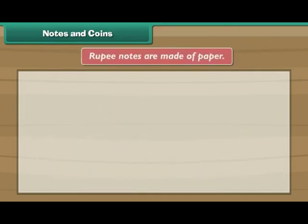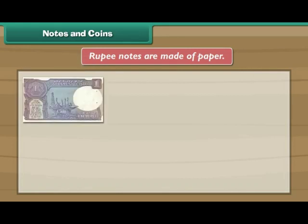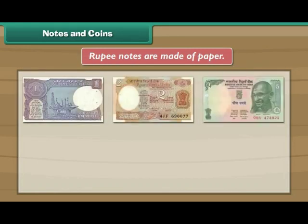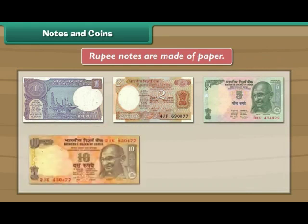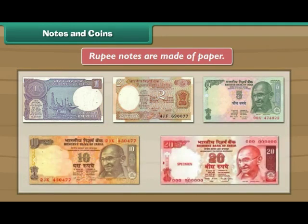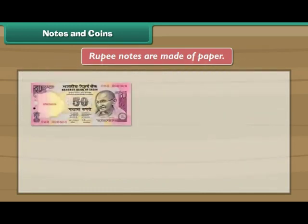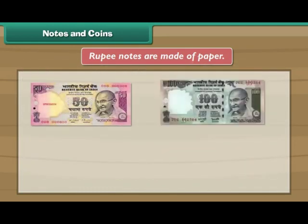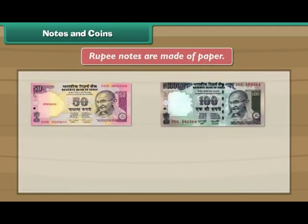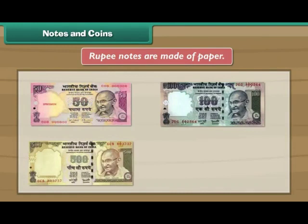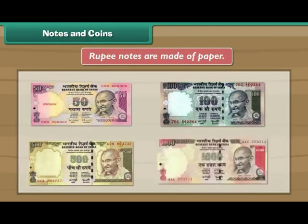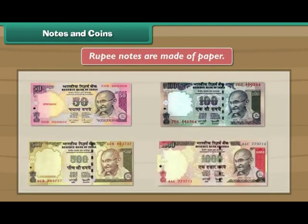Rupee notes are made of paper. There are 1, 2, 5, 10, 20, 50, 100, 500 and 1000 rupee notes.